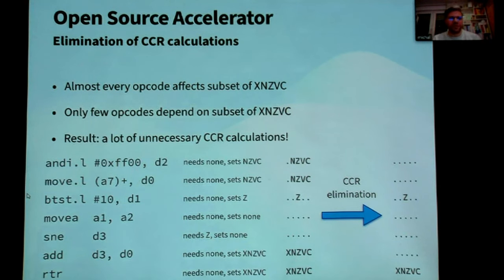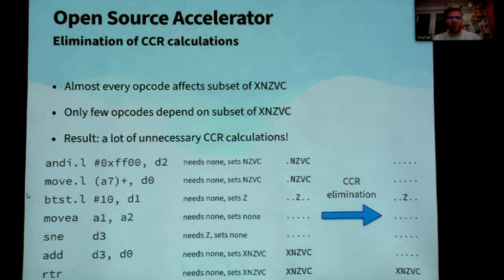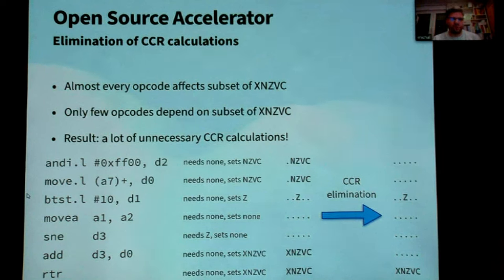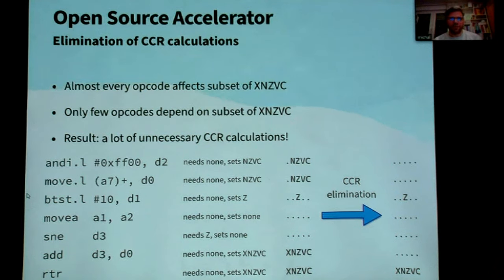The condition code elimination is the most major problem when emulating Motorola processors, because nearly every single opcode affects the condition codes. On the other hand, only a few opcodes in the program flow actually depend on these condition codes, meaning there are a lot of unnecessary calculations that can be avoided. In the example shown, almost every opcode updates the condition codes, but after elimination in Mo68, only two places need to update or use the codes — a very great improvement in the generated ARM code.